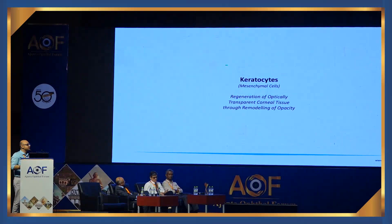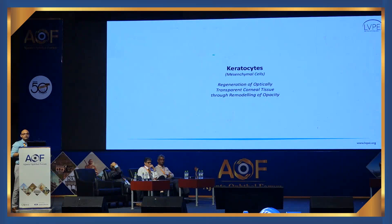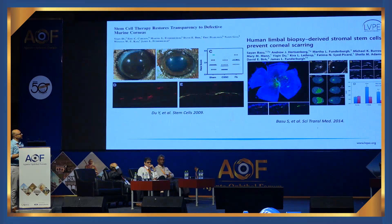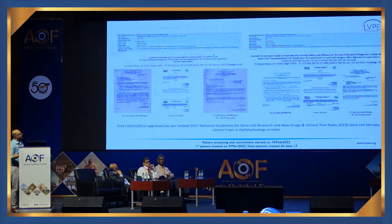Now I'll talk about the cells — the keratocytes we are trying to regenerate. The aim is to regenerate optically transparent corneal tissue through remodeling: you don't replace anything; you put new cells into the cornea and try to see if the corneal stroma can regenerate. This is based on seminal work done in Jim Funderburgh's lab in Pittsburgh, where Vishal now works and is also a part of this work along with his collaborator Gary Alam.